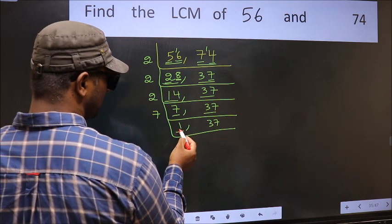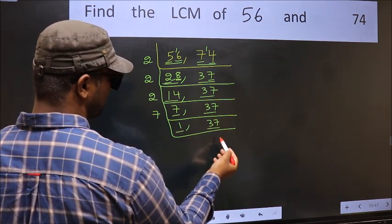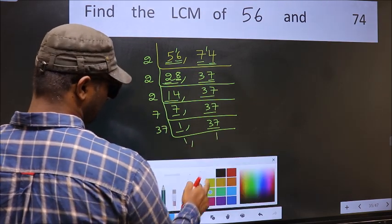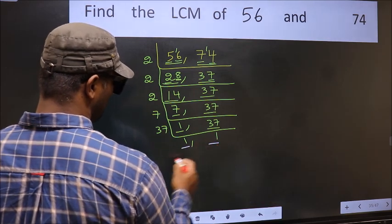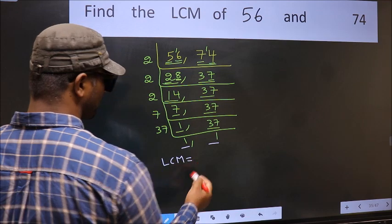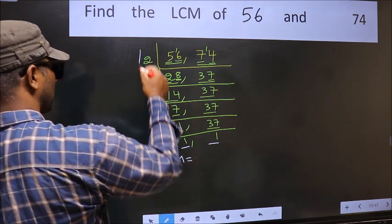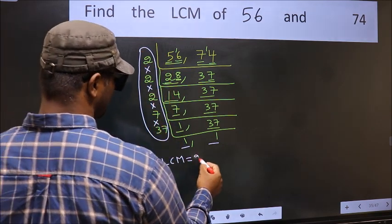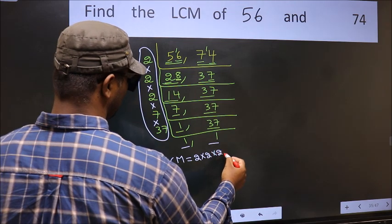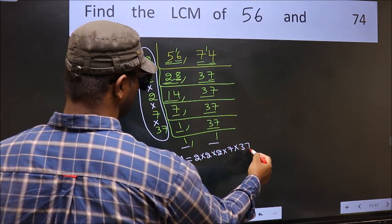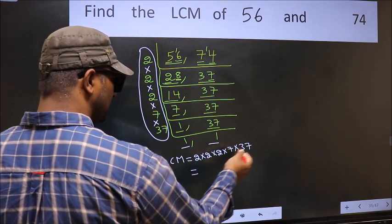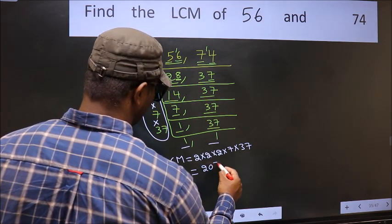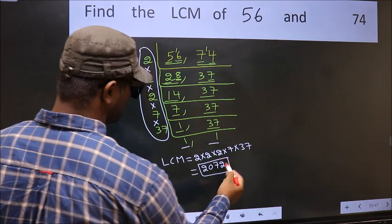Now we got 1 here, so focus on the other number, 37. 37 is a prime number, so 37×1=37. We got 1 in both places. So our LCM is the product of these numbers: 2×2×2×2×2×7×37. When we multiply these numbers, we get 2072 as our LCM.